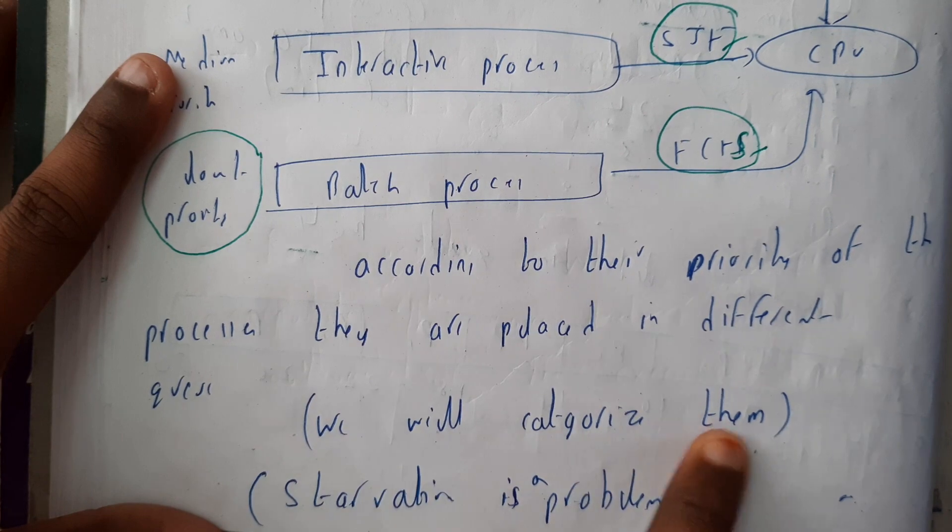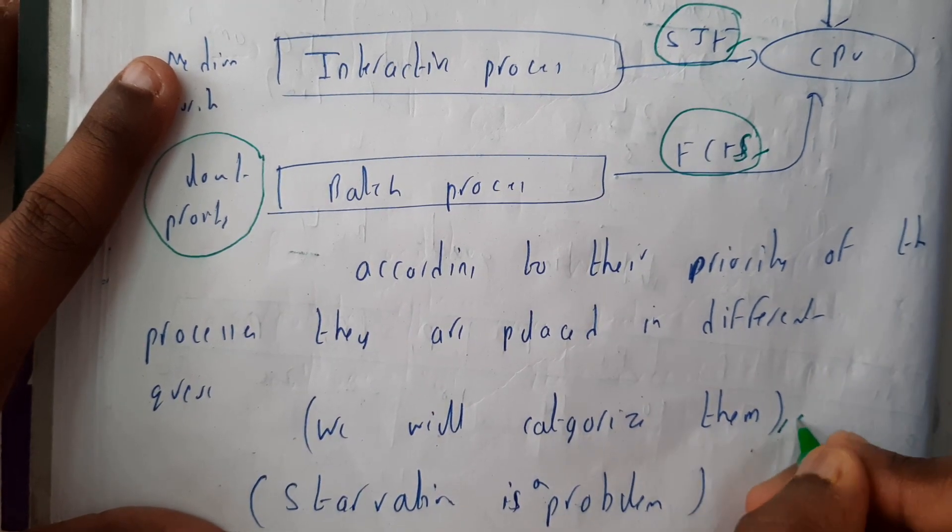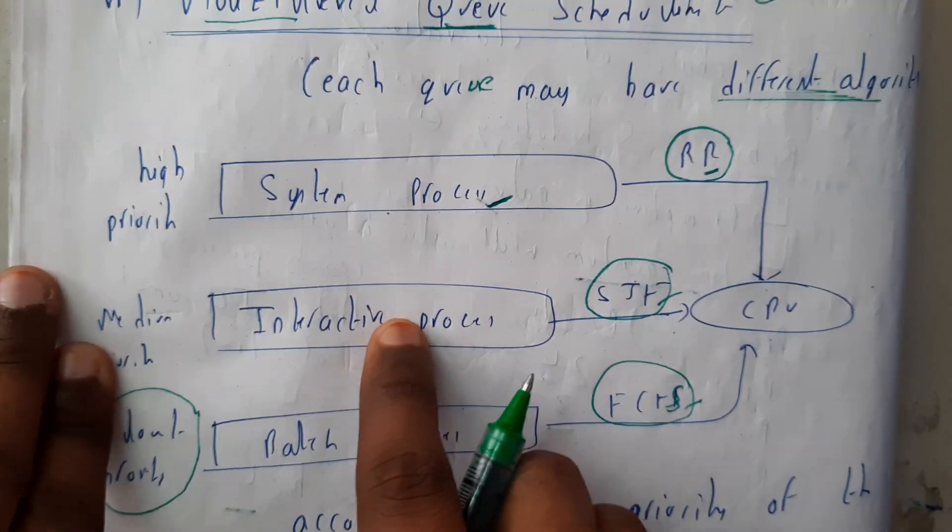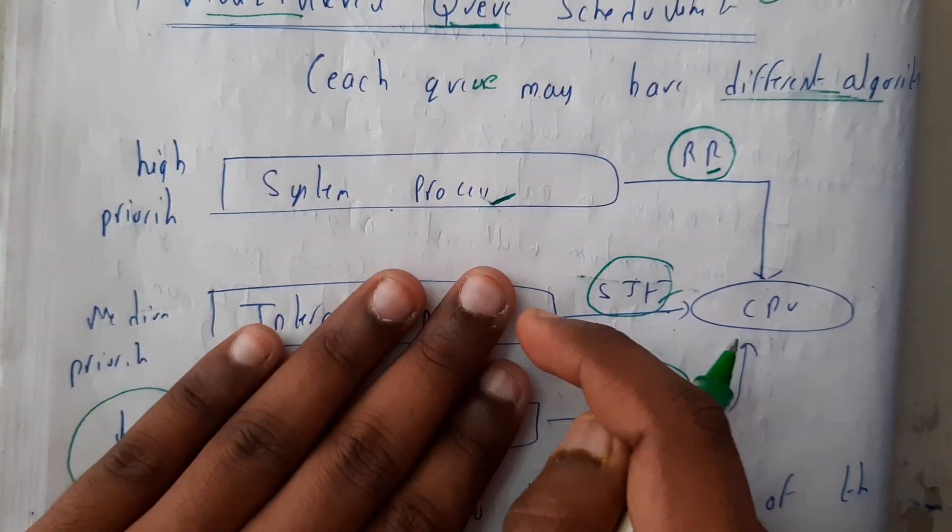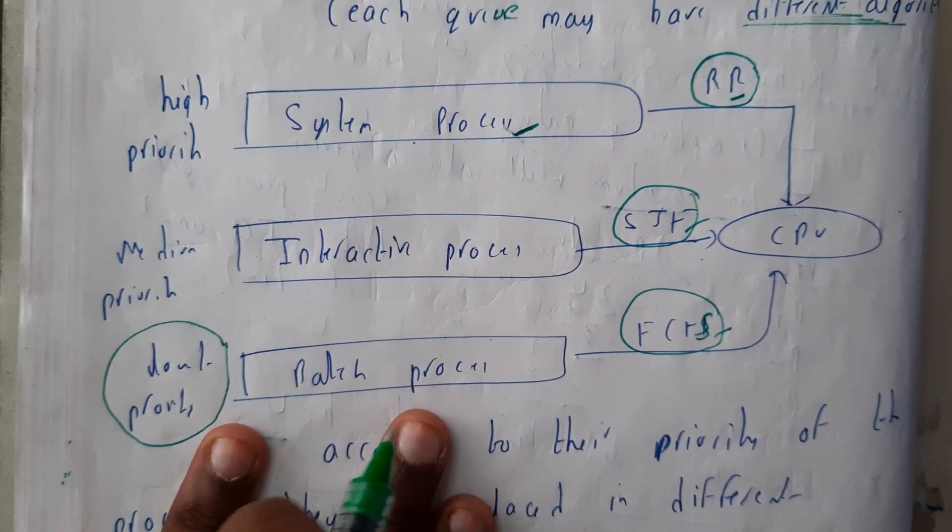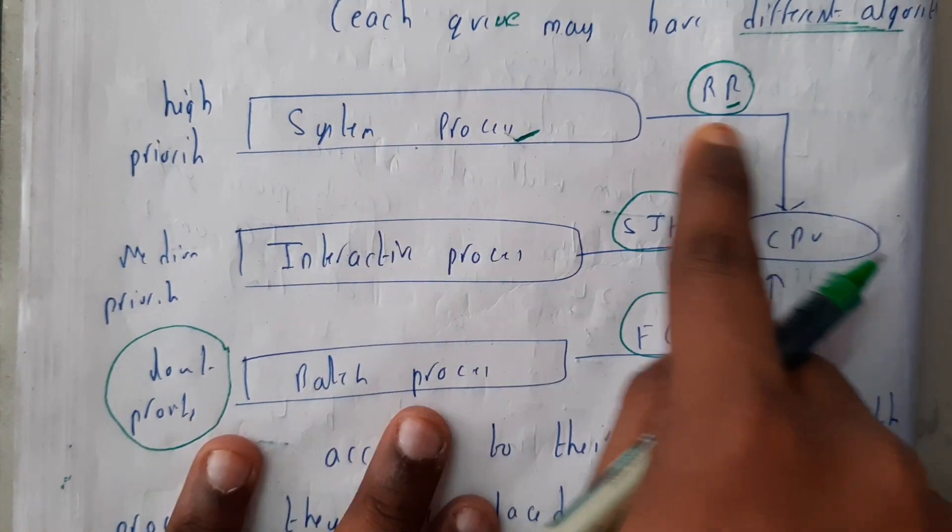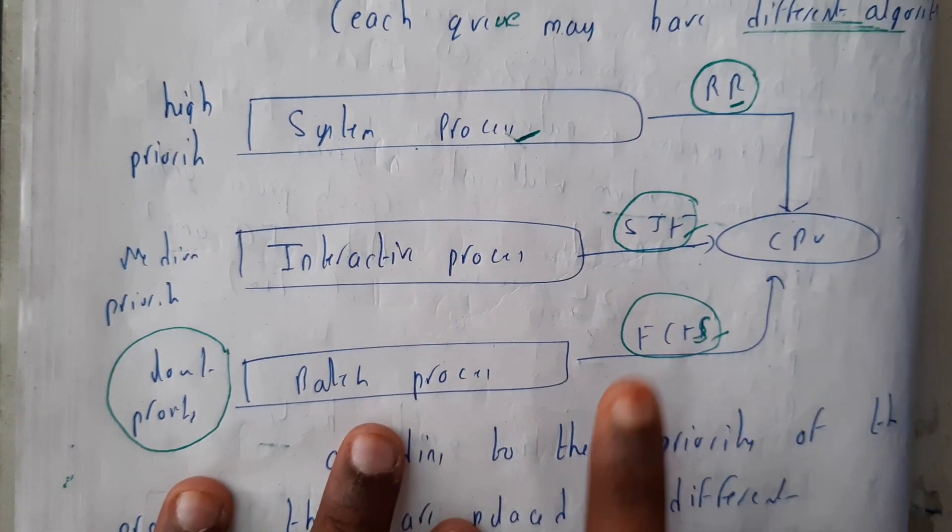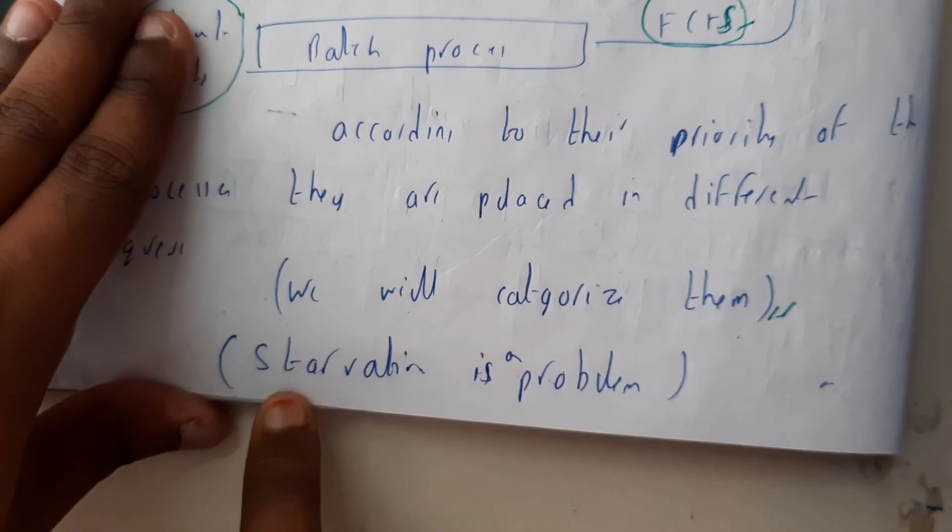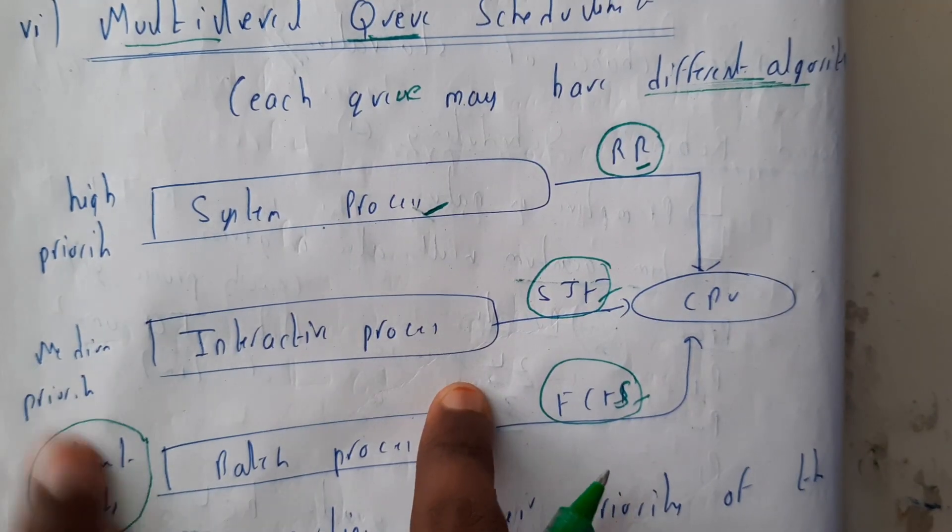But here there is a problem, guys. So basically, if there are only high priority jobs coming and there are no medium or low, then what will be the situation? They'll always be trying to fill in here and this only will be running. So this is not efficient, right? And even there is a possibility of starvation also in this situation.